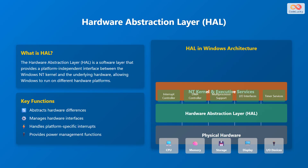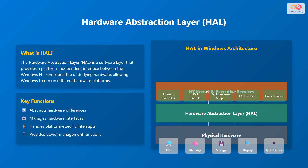The hardware abstraction layer, or HAL, is a critical component that provides a platform-independent interface between the Windows NT kernel and the underlying hardware. This allows Windows to run on different hardware platforms without modification. Key functions of the HAL include abstracting hardware differences, managing hardware interfaces, handling platform-specific interrupts, and providing power management functions. The HAL manages various functions such as the interrupt controller, direct memory access, or DMA, controller, multiprocessor support, input-output interfaces, and timer services. The HAL interacts with hardware components like the CPU, memory, storage, display, and input-output devices.